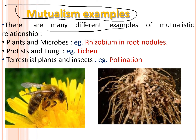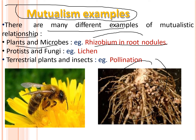Common examples of mutualism include plants and microbes, such as Rhizobium in root nodules. The Rhizobium bacteria absorb carbohydrates and essential nutrients from the roots, while Rhizobium helps in the nitrogen fixation of the root nodules. Both organisms provide equal functions to each other and are beneficial for each other's survival.